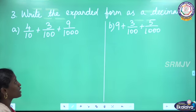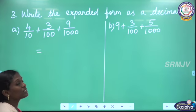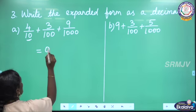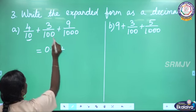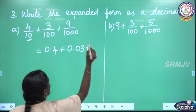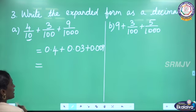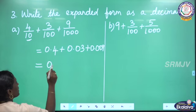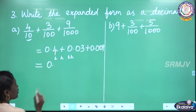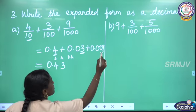The next question: write the expanded form as a decimal. Here fractional expanded form is given and we write it as a decimal number in standard form. So 4 by 10 — for 4 tenths, the decimal number is 0.4 — plus 3 by 100, that is 0.03, plus 9 by 1000, that is 0.009. The whole number part is 0. In the 10th place: 4, in the 100th place: 3, in the 1000th place: 9.